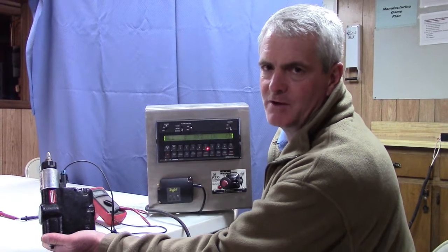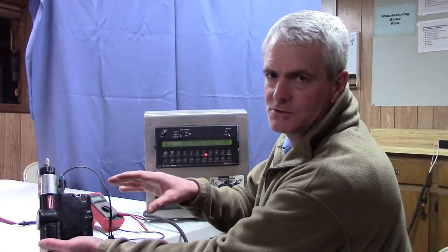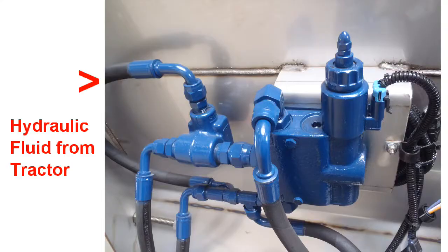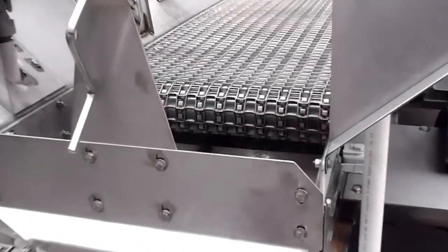We use the 15 gallon per minute PWM valve to drive the bed chain and the rate controller is sending a signal to the PWM valve. Hydraulic fluid goes through the PWM valve which goes back to a hydraulic motor on a gearbox that's connected to our rear roller shaft to drive the bed chain.